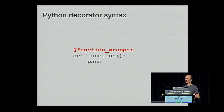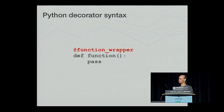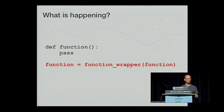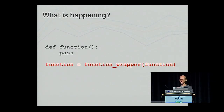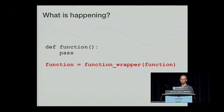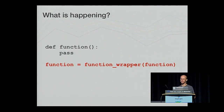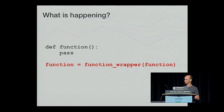Even if you've never written your own decorator and have only used them, you would know that decorators use the at symbol as a prefix. The at symbol here, though, is little more than syntactic sugar. One can do the same thing by invoking the decorator function explicitly, passing in the function to be decorated and replacing the original with the result. In fact, this is what you had to do before the decorator syntax was introduced in Python 2.4.